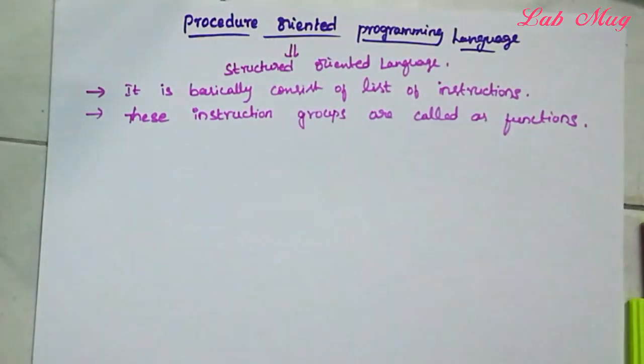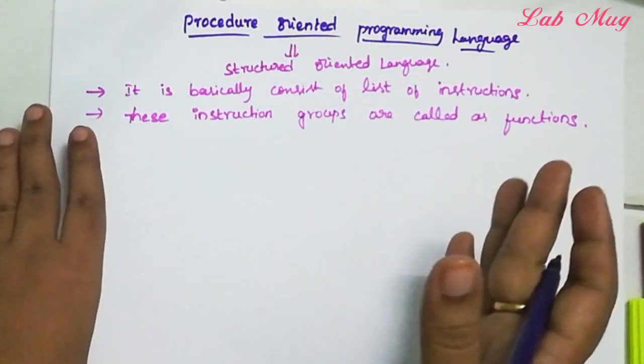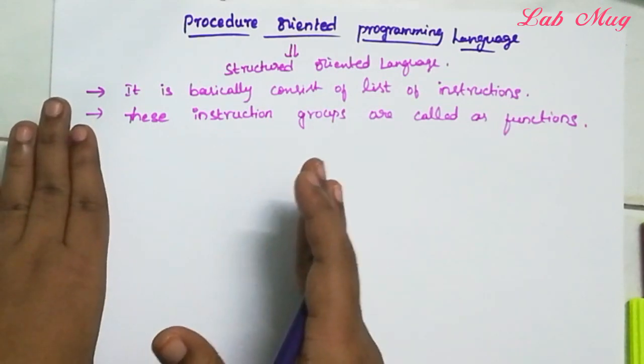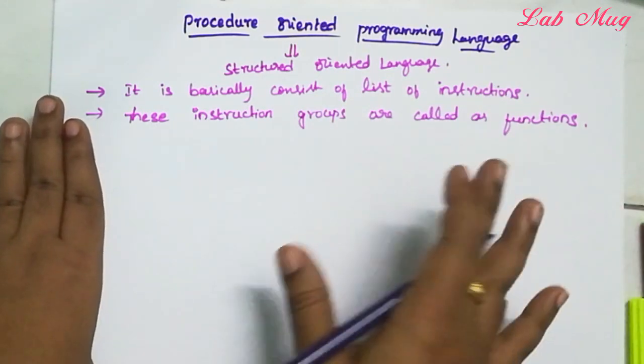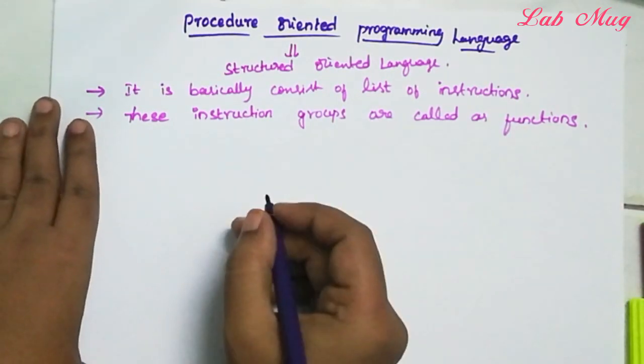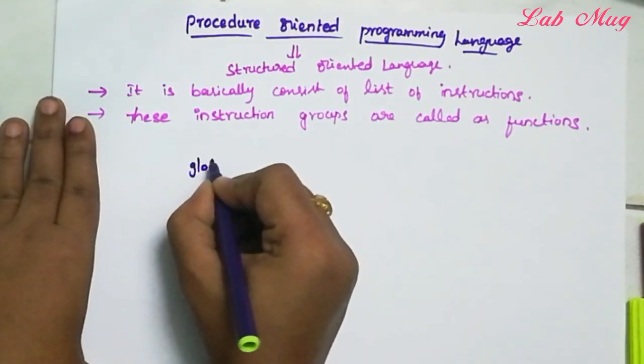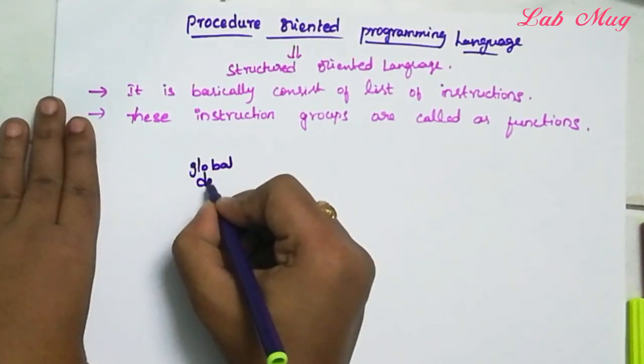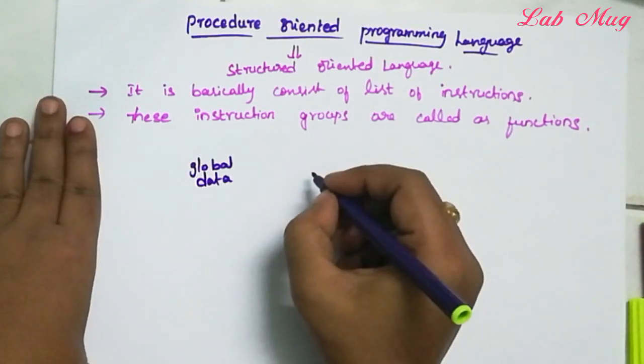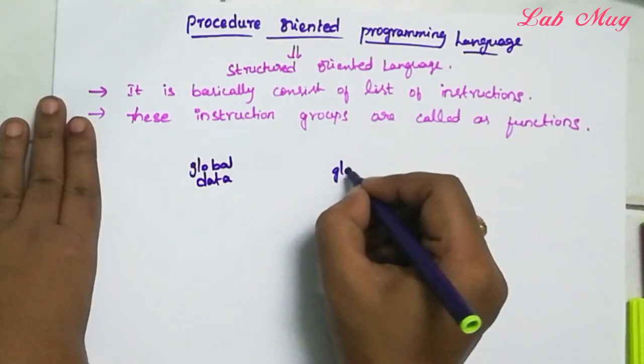In procedure oriented language, every program is divided into some functions. But every function accesses global data or every function accesses variables. So let me explain diagrammatically.